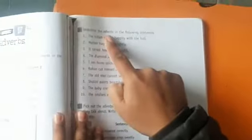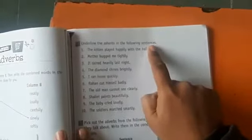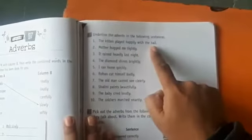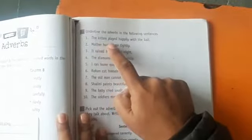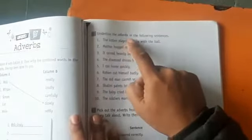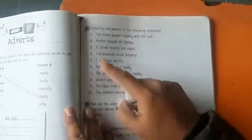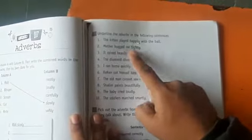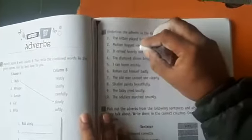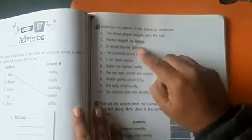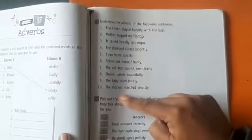Next, there is page number 64. Underline the adverbs in the following sentences. Here you will underline the adverbs. One or two I am doing for you. The kitten played happily with the ball. The kitten, first you will have to keep in mind what is verb. Verb is played, how he played? Happily. So underline this one, happily. Same way, mother hugged me tightly. Hug, how did he hug? Tightly. This way you will underline the adverbs.